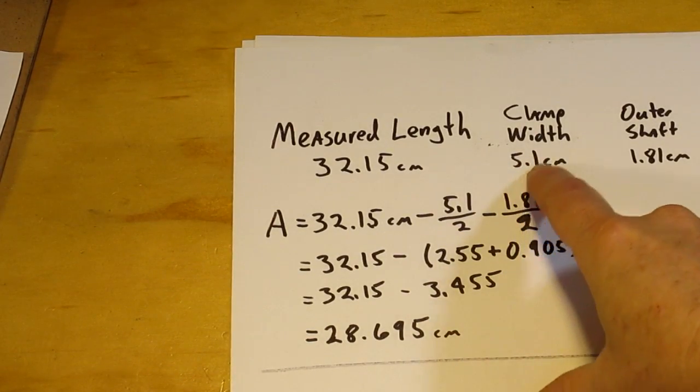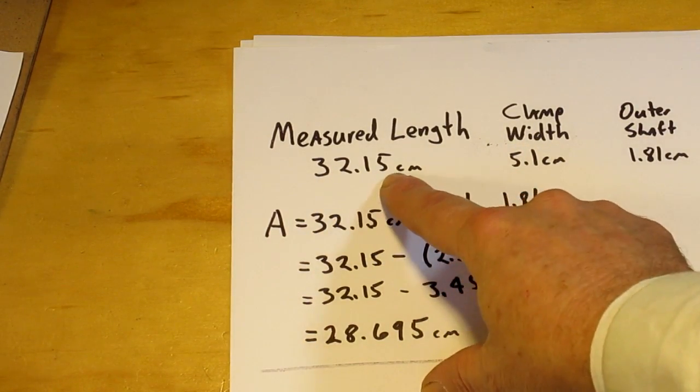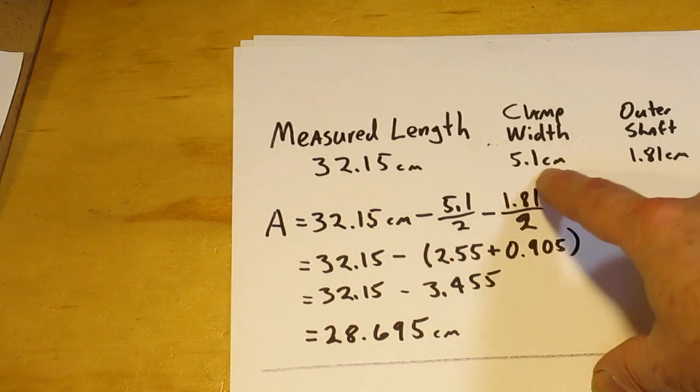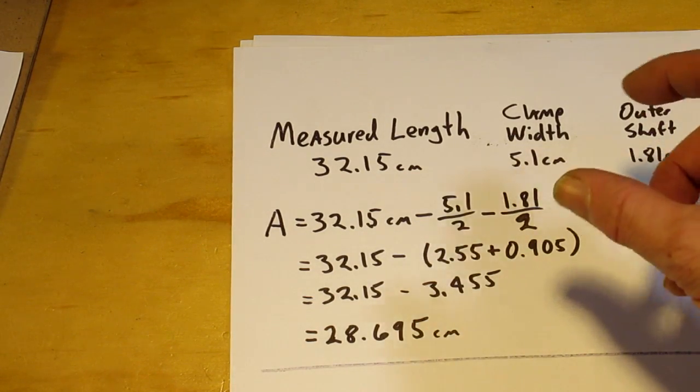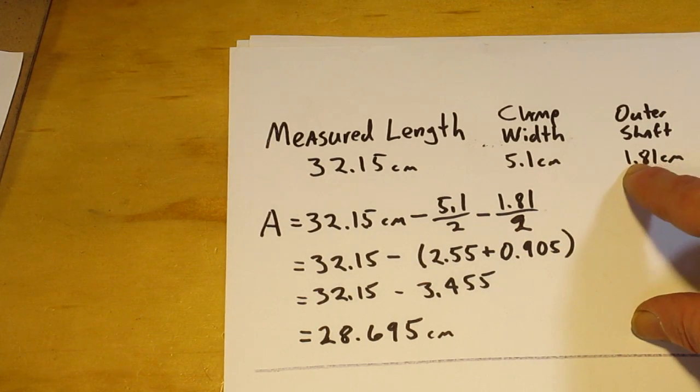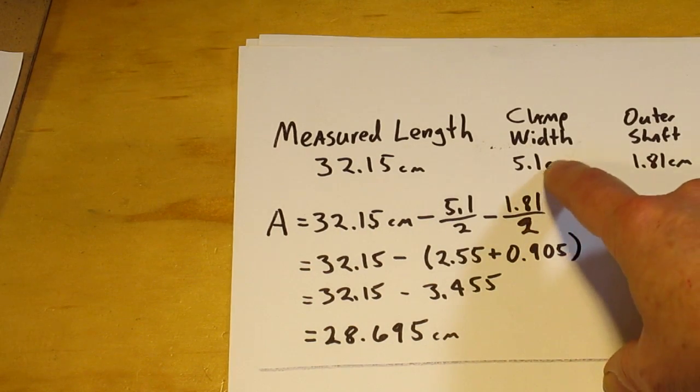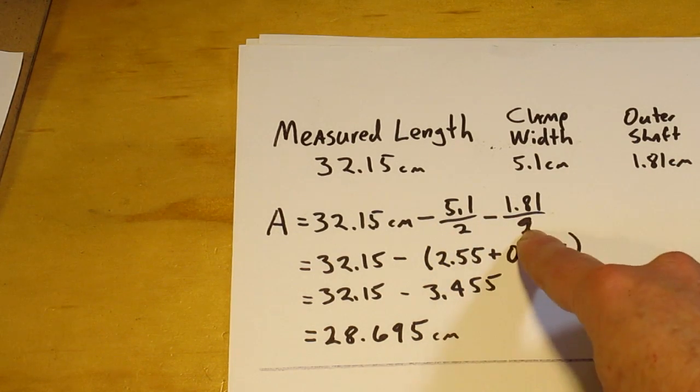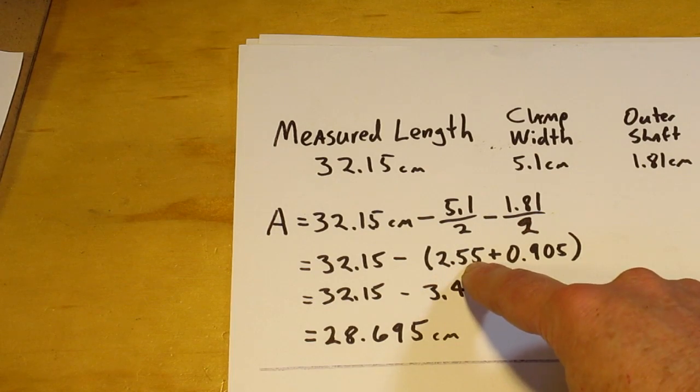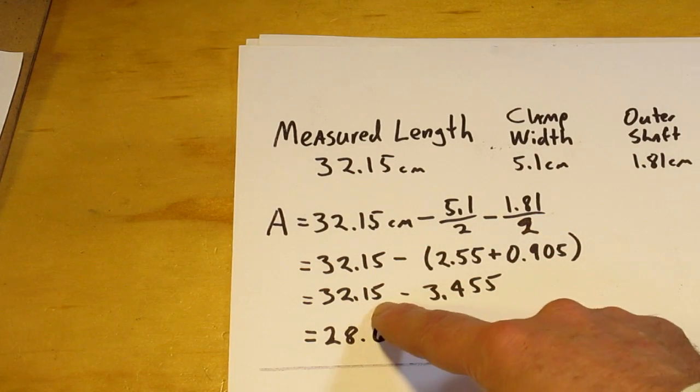Okay, so when I measured from the outside of the clamp to the end of the outer shaft, I measured a length of 32.15 centimeters. I measured that saddle clamp width and it was 5.1 centimeters. And the outer shaft around the end, I measured that at 1.81 centimeters diameter. So we need the radius instead of the diameter, so we divide those numbers by 2. It gives us 2.55 and 0.905. We add those together and subtract that from our starting measurement of 32.15.